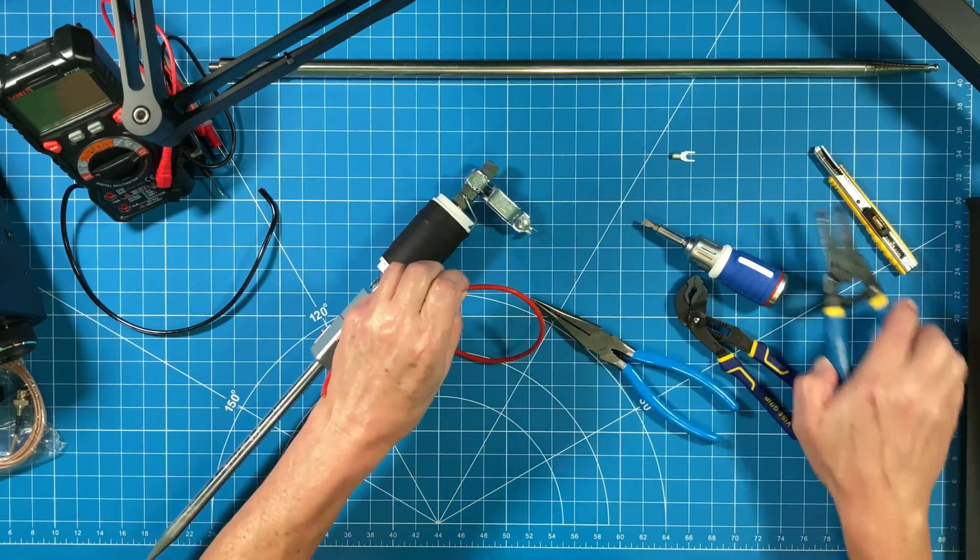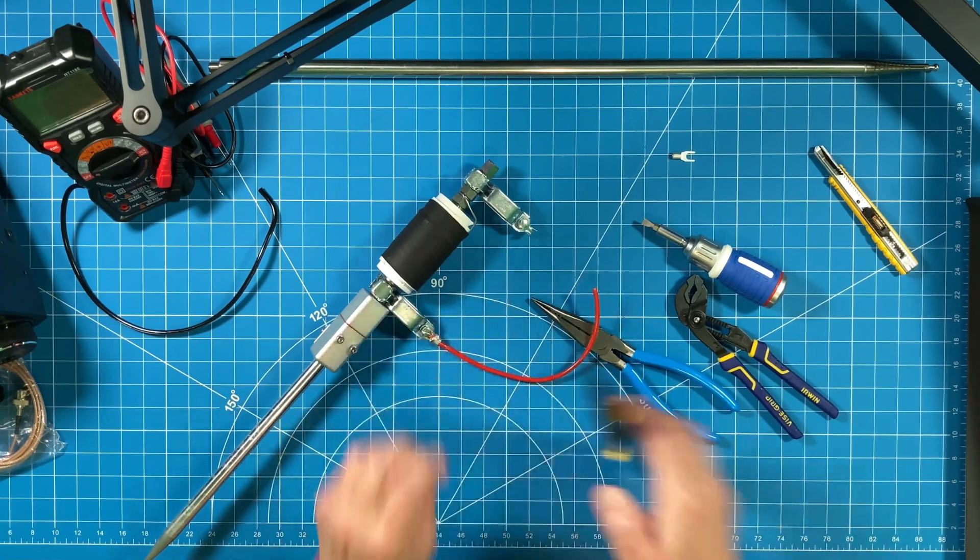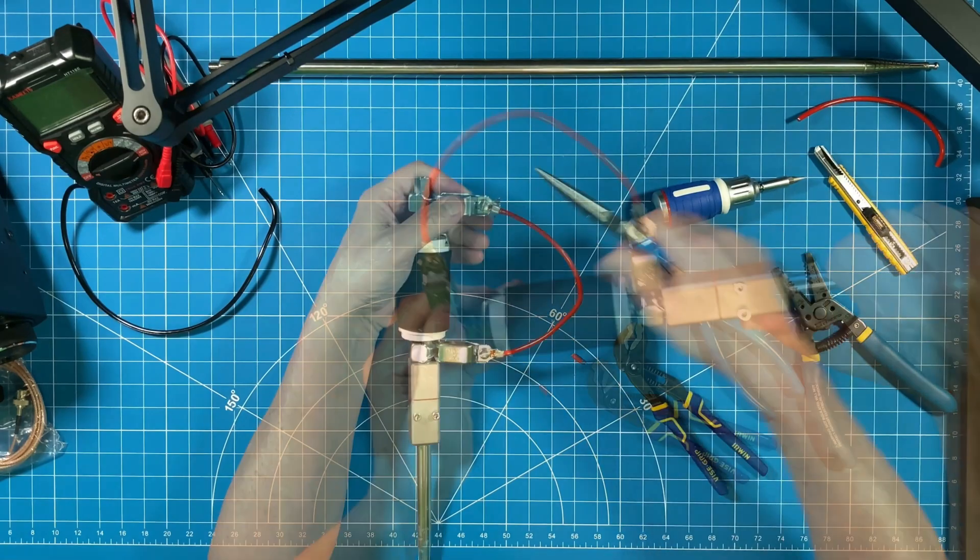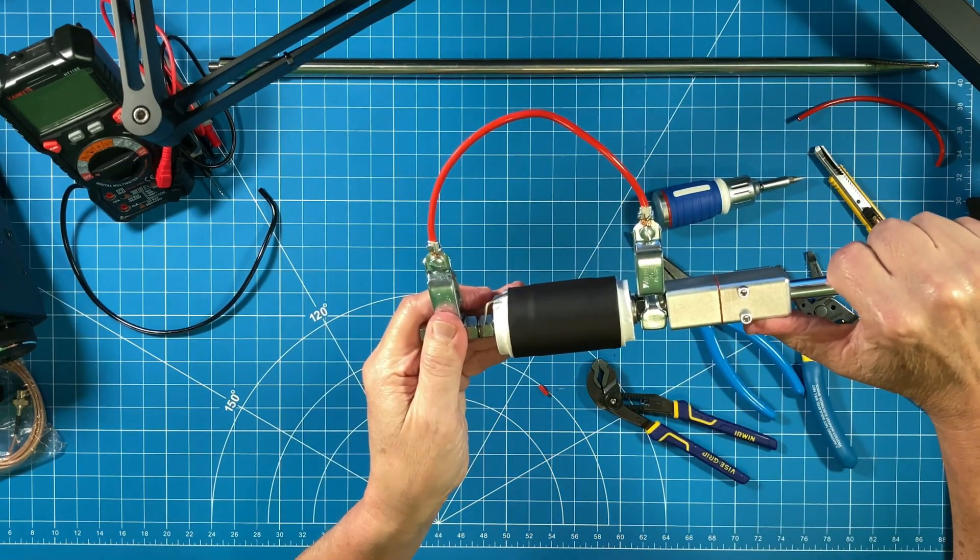Next up is just cut this wire to length and do the exact same thing we just did on the other terminal. Here I've done that. There was no need to take you through every step of that process. We have a completed jumper.